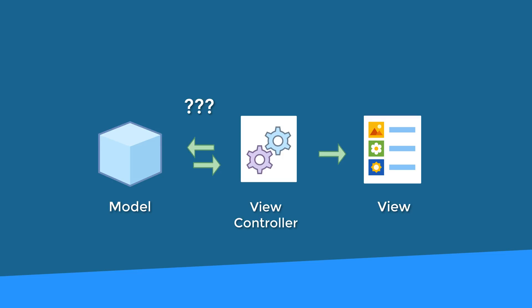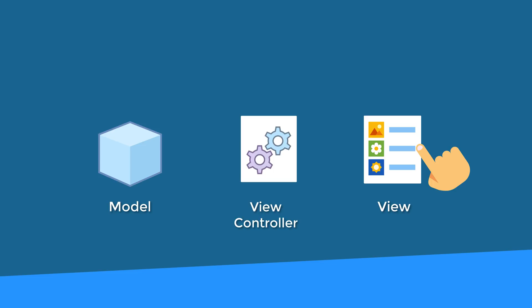Rather than treat these pieces of data as independent, we can group all the relevant information for a single card into a card class. This way, we can simply create 16 card objects, and each card object would have three properties containing the details for that card. The model will simply pass an array containing 16 card objects to the view controller. When a user starts interacting with the view, the view tells the view controller each time the user taps on a card, and the view controller will determine what to do based on whether the two cards that were flipped over match or not.